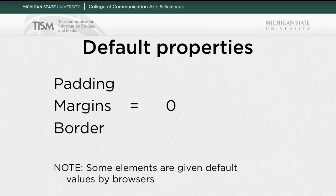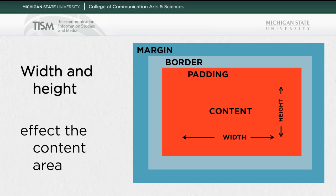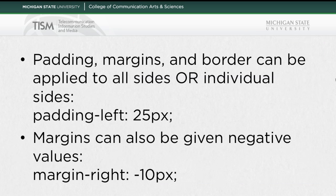But you can set these things to zero on your own to get the appropriate result. One thing you can do is set the width and height of the content. Without doing so, it will spread the element all the way across the page, or until it reaches something else or is constrained by another box. Padding, margins, and border can be applied to all sides or to individual sides. If I want to apply it to all sides, I would say padding: 25px. If I want it just on the left side, I use padding-left and then a numerical value.